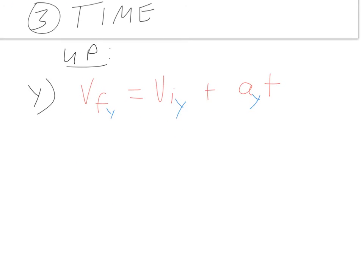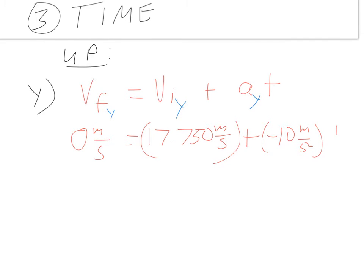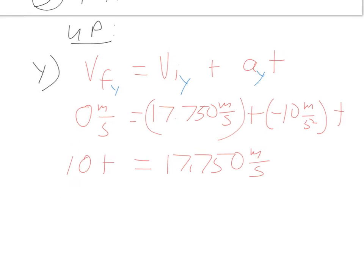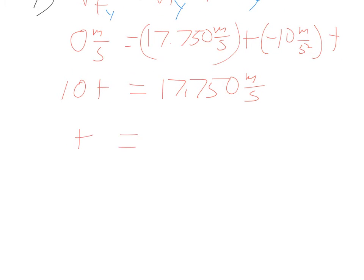Substituting in, I get: 0 m/s = 17.750 m/s + (−10 m/s²) × t. The only unknown is time, so I can solve for it with a little algebra. Moving the −10t term and dividing both sides by 10 gives the time up as 1.775 seconds. I have to be careful — this is the time for the projectile to go from where it was launched up to its highest point.